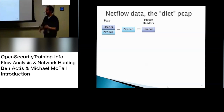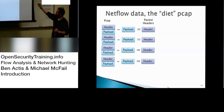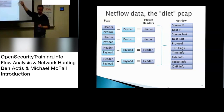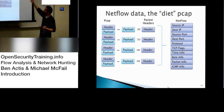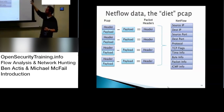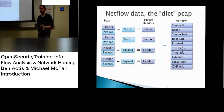NetFlow is essentially PCAP Lite — you're yanking out most of the payload information and you're left with just the headers: source IP, destination IP, who's talking to who, source port, destination port, the protocol. Primarily you're looking at TCP and UDP, with some ICMP and other protocols. We also have flags, which we'll come back to when we look at IDS evasion techniques, plus time info, byte info, packet info, and ICMP info.